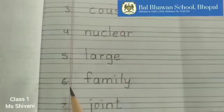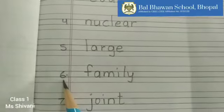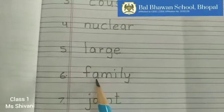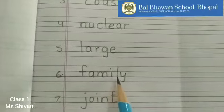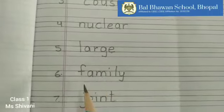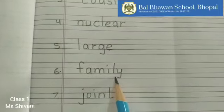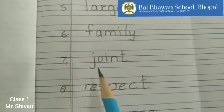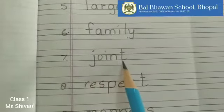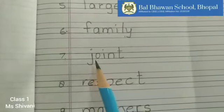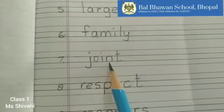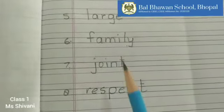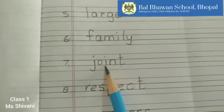Joint family. Number 6. Family. F-A-M-I-L-Y. Family. Number 7. Joint. J-O-I-N-T. Joint. Large family is also called joint family.